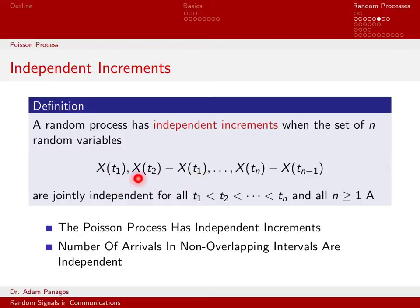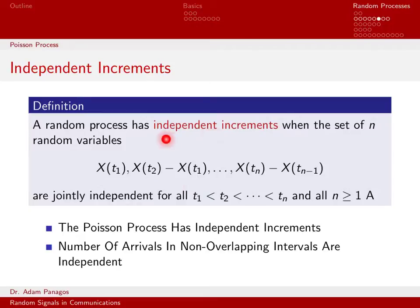When you think about what the quantity x at time t2 minus x at time t1 means, this is basically the number of arrivals that have happened in the time interval from t1 to t2. So it makes sense that the number of arrivals during this time interval is independent of the total number that have happened up until then. This differencing gives us the independent increments property. Any random process where x of t1 and these difference quantities are all independent — for basically all n — is what we call an independent increments random process.